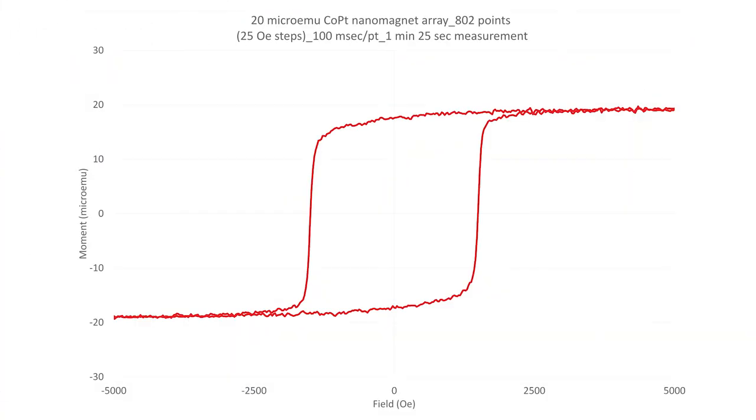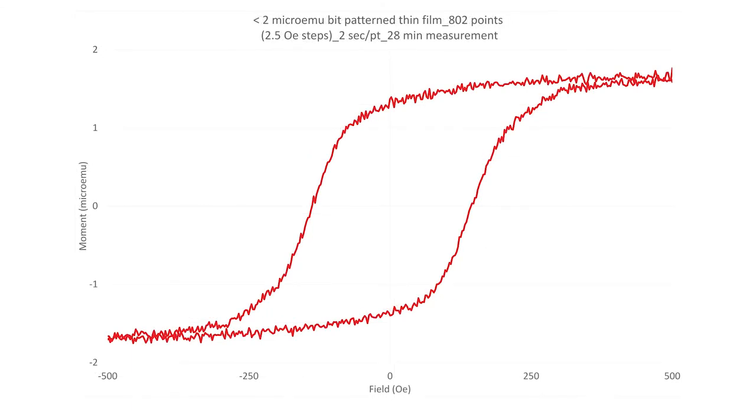So in addition to showing you examples of very fast hysteresis and first-order reversal curve measurements, I want to also show you a couple of examples of very low moment measurements. Here you're seeing a 20 micro EMU cobalt platinum nanomagnet array. And here you're actually seeing a bit-patterned magnetic media sample with a saturation moment of only two micro EMU. These give you some indication of the sensitivity of the Model 8600 VSM.